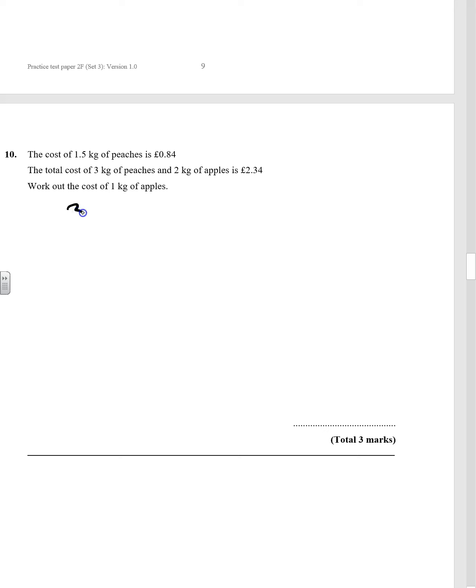To get three kilos of peaches, we're going to have to double the 84p. So we do 2 times 0.84, which gives us £1.68.